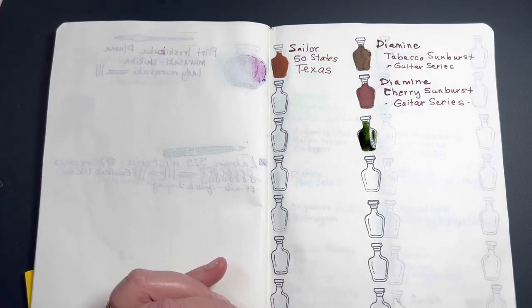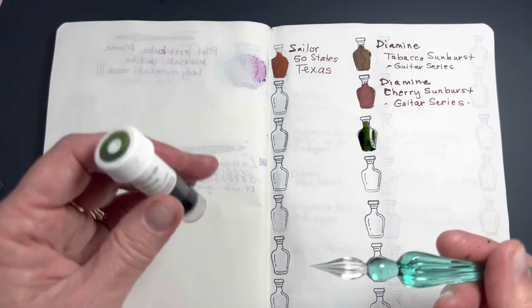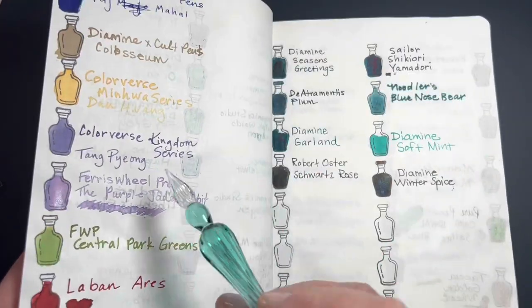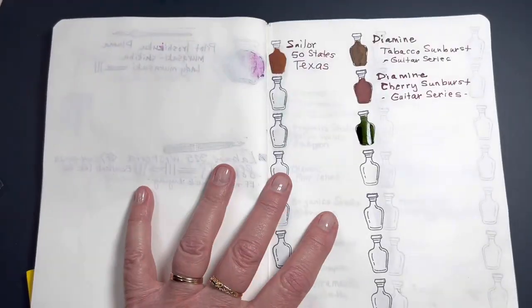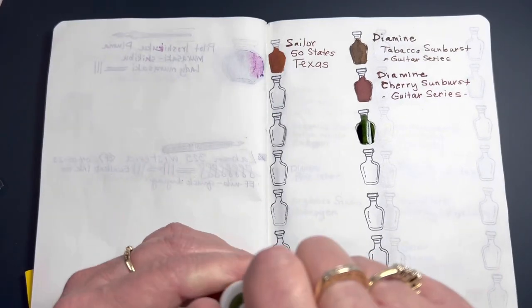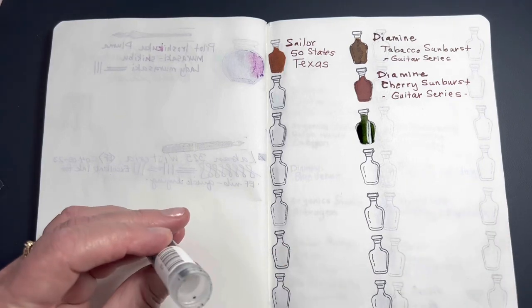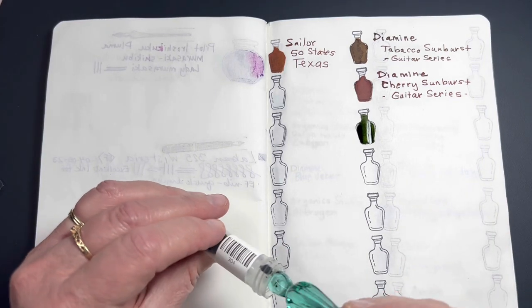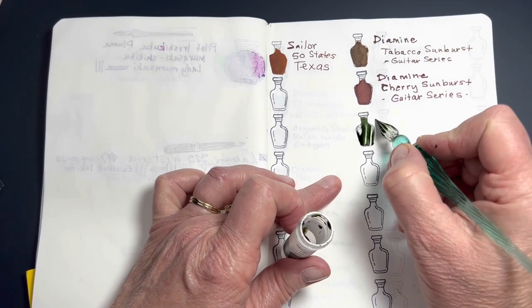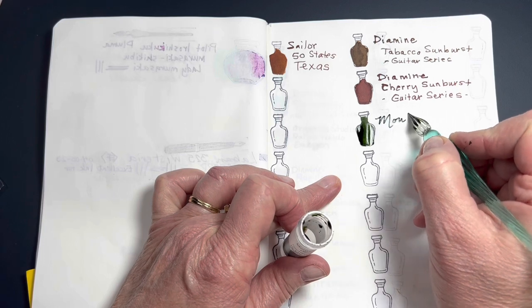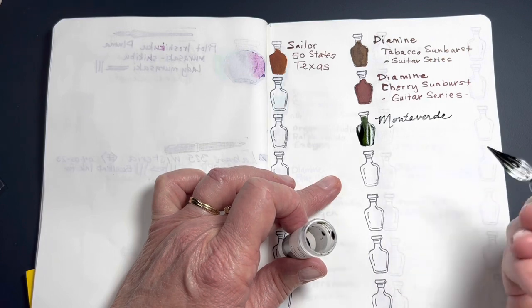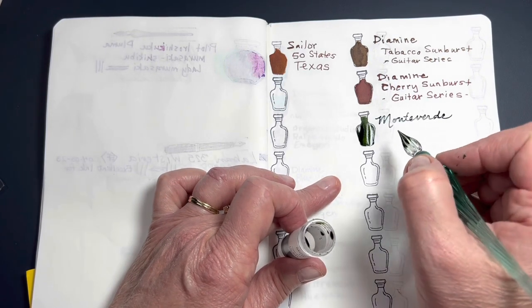And today I'm just going to be using the J. Herbin glass dip nib that actually came with the April ink flight box. So I kept that because I'm trying to be careful.